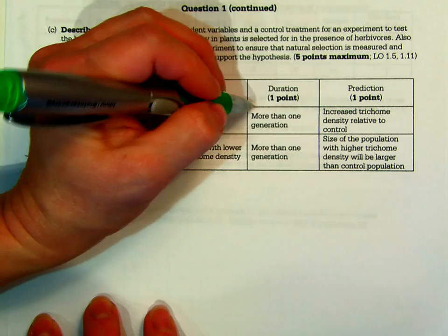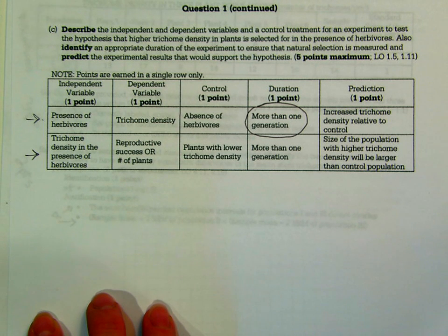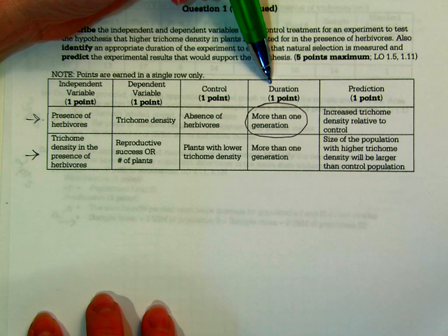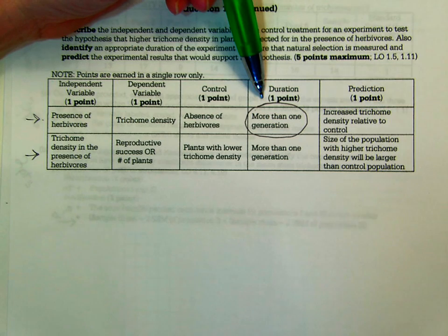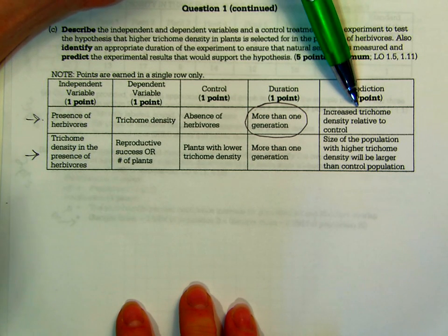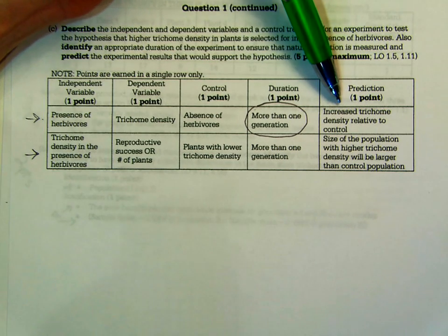For duration, you needed to say more than one generation. This question was about natural selection — to observe natural selection you need to see who survives, reproduces, and leaves the most offspring for the next generation, which requires running the experiment for more than one generation of plants. Many students missed this point by being vague, saying 'a long time' or 'a couple of months.' The prediction that would support the hypothesis is that plants raised in the presence of herbivores would show increased trichome density relative to the control over time.